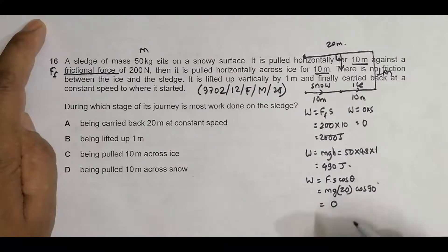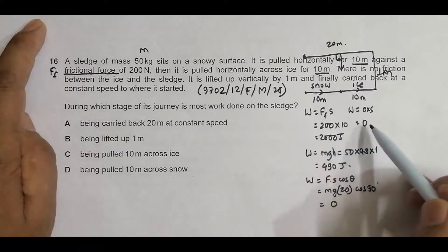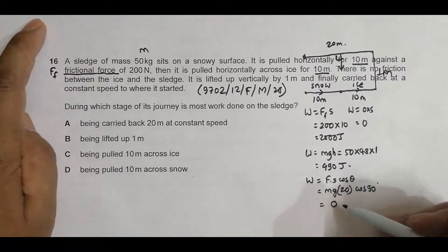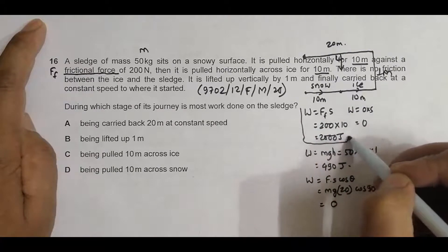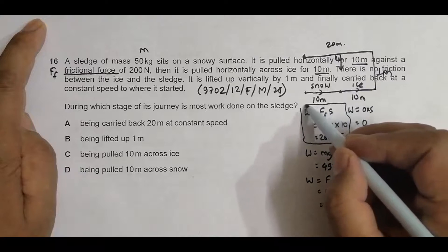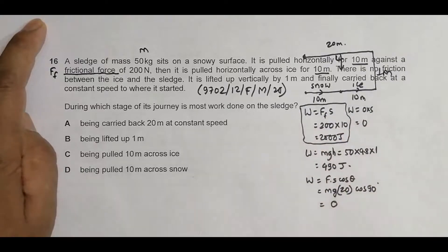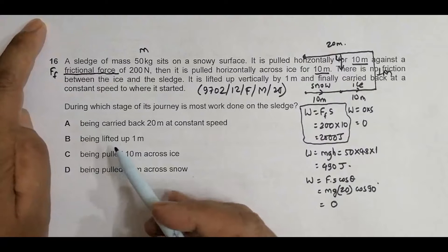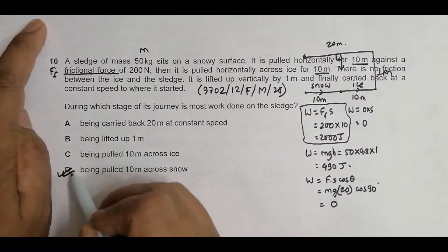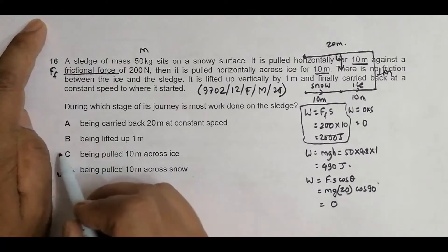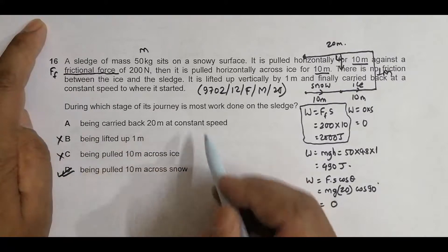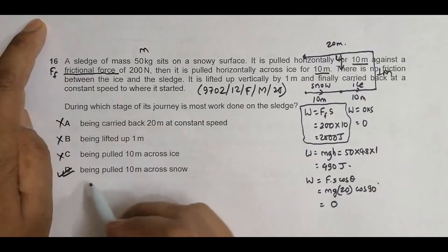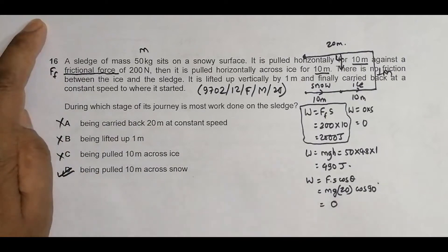So we have four works: 2000 Joules across snow, zero across ice, 490 Joules when lifted up, and zero when carried back at constant speed. The highest amount of work is done when the body is slid across the snow due to friction. So the correct choice is the 10 meters across the snow.